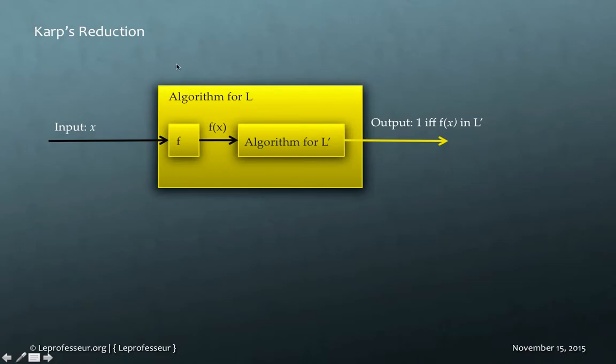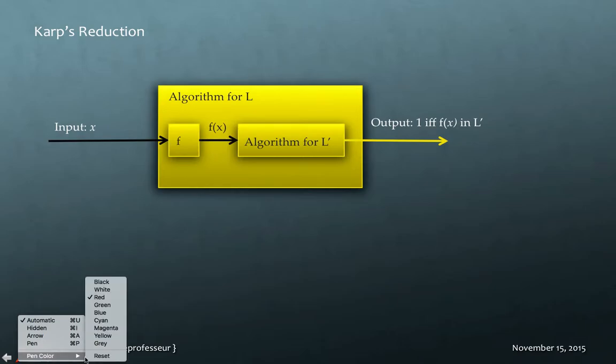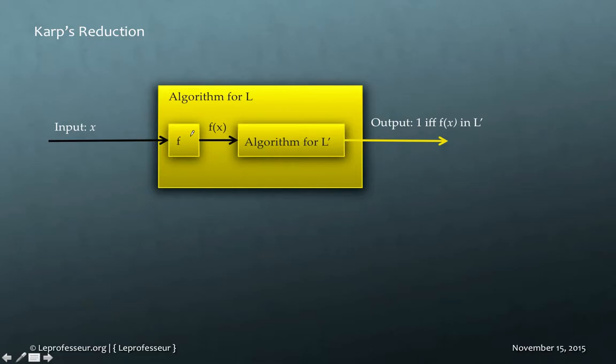What it means is that Karp reduction function F, this function, what it does is that it translates a problem into another form.